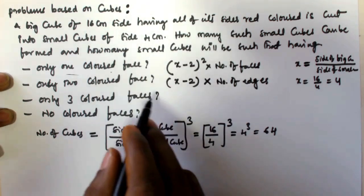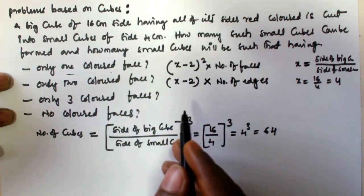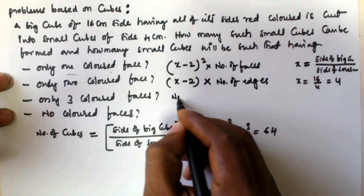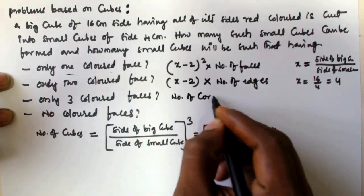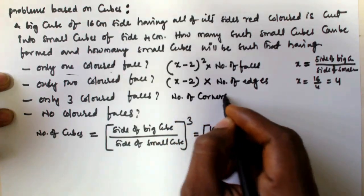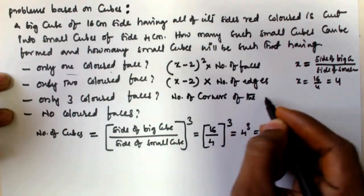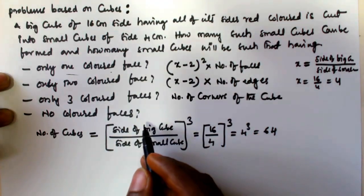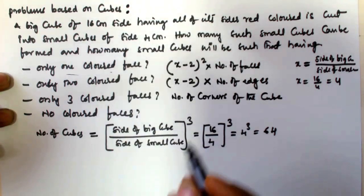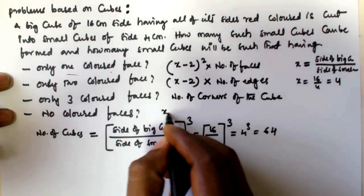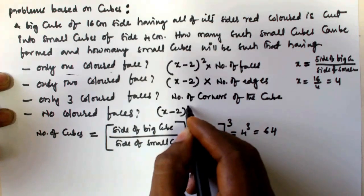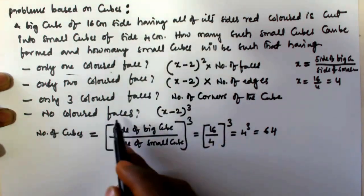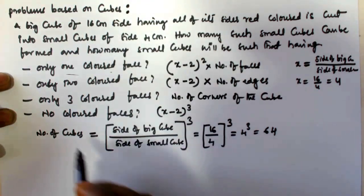Only three colored faces exist at the corners only, so the number of three-colored-face cubes is given by the number of corners of the cube. And the number of cubes with no colored faces is given by (x minus 2) cubed.